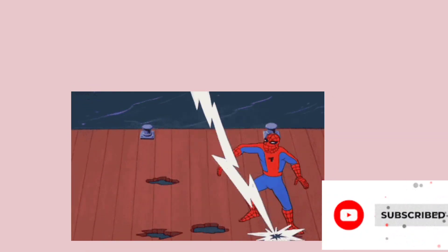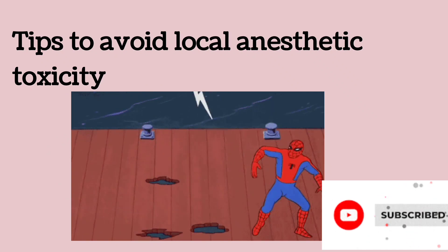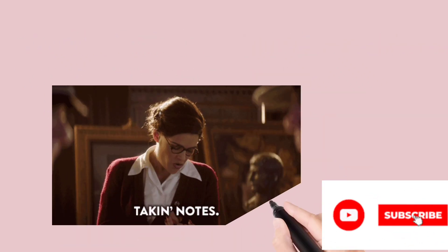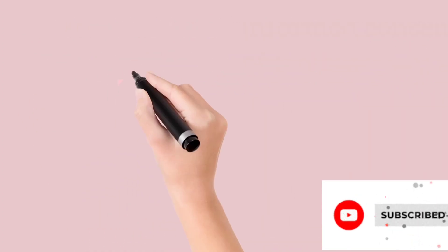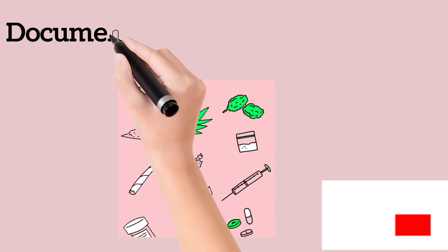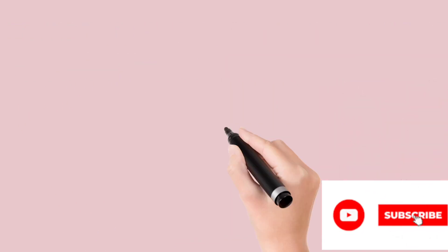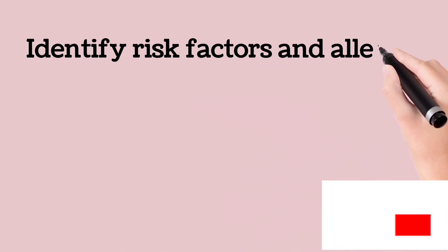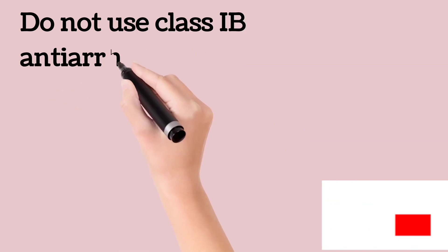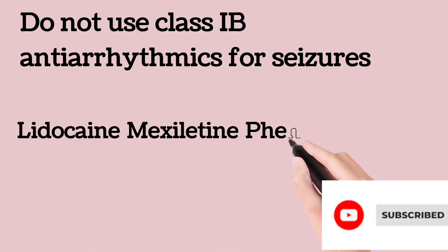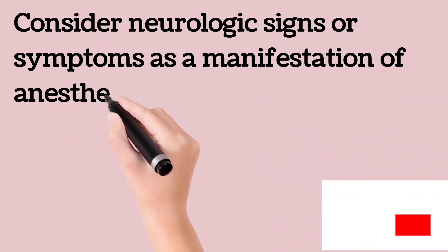Tips to avoid local anesthetic toxicity: consider obtaining informed consent in patients with a history of anesthetic reaction, and document the amount and type of anesthetic used during the procedure. Obtain an adequate history and physical examination to identify relevant factors and allergies. Do not use class 1B antidysrhythmics for seizure or dysrhythmia due to cocaine toxicity.